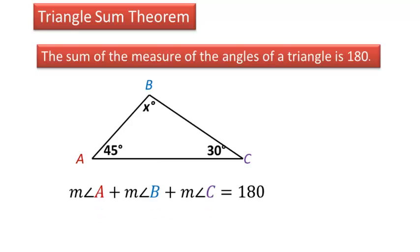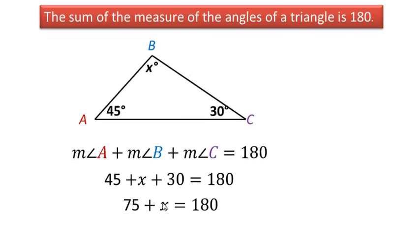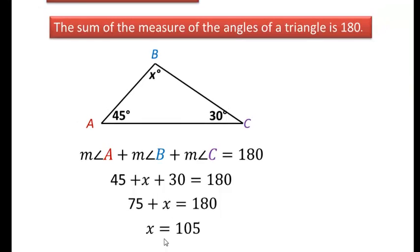Let's use the triangle sum theorem to set up an equation and solve for x. In this case here, all three of these angles add up to 180, so 45 plus x plus 30 equals 180. And then just simplifying, 45 plus 30 is 75, and then subtracting 75 from both sides would leave us with x equals 105. So we can use the triangle sum theorem to find missing angles.